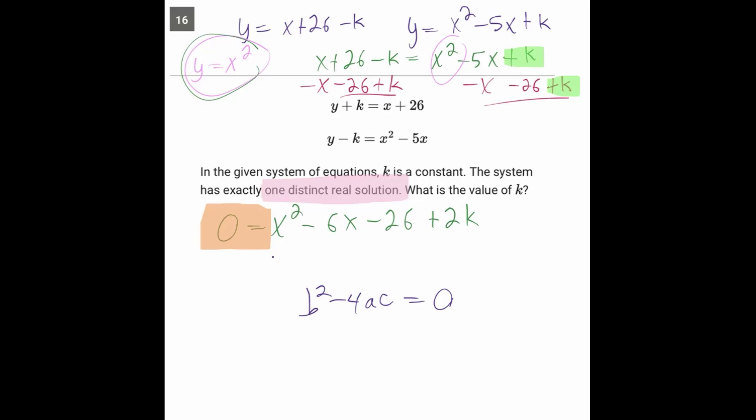So what are A, B, and C? This is in the format of AX squared plus BX plus C. The A is the invisible number one in front of X squared. The B is the negative six in front of the X and the C is all the other stuff. Negative 26 plus 2K. So having a C coefficient that itself is made up of two terms, that's really common on the SAT.